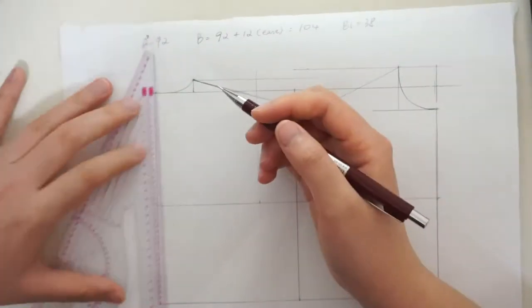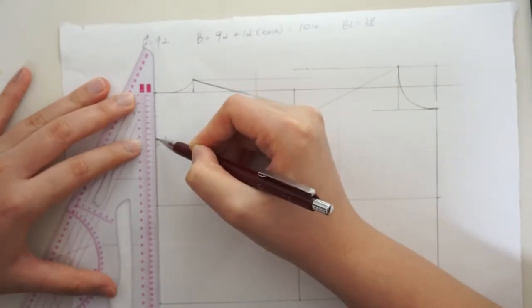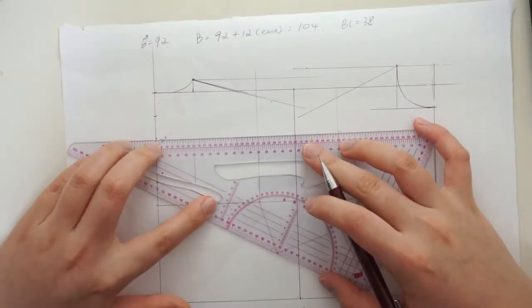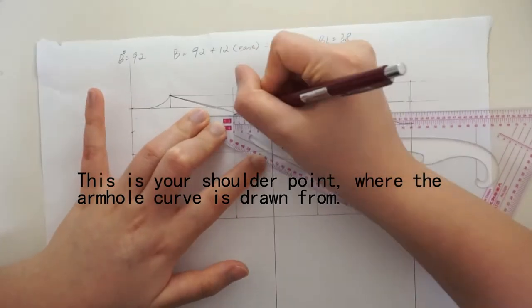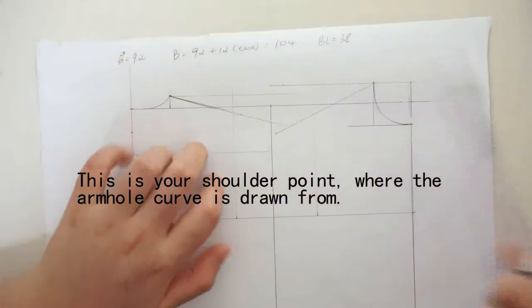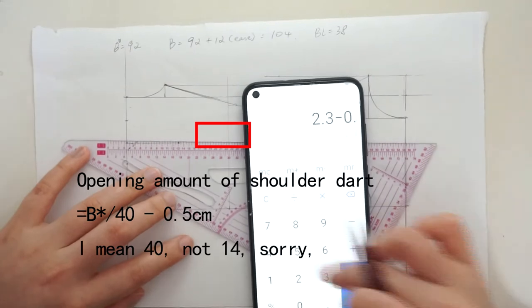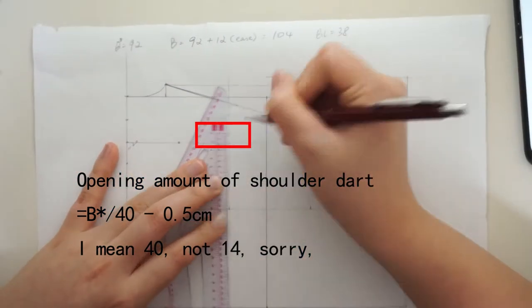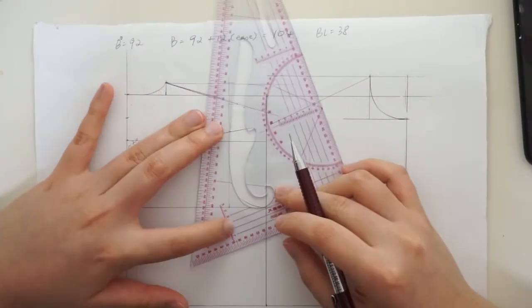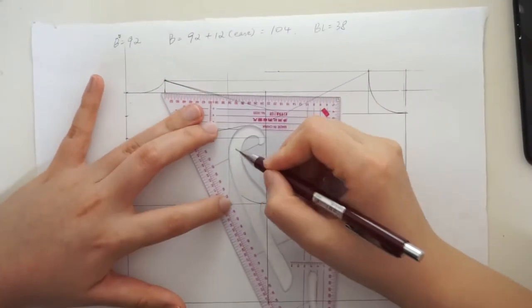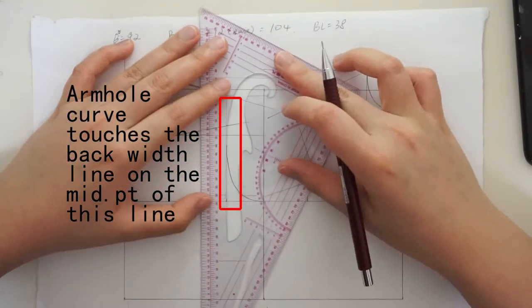Next, we start finding the dots in the armhole. Start with the back. Divide the distance from your neck to your bust into 5 equal parts. Draw a horizontal line on the second portion. Measure 1.5cm from your back width and find an intersection point with your back shoulder seam. Calculate B star over 40 minus 0.5. This is your back dart measurement. Draw a dot at the midpoint on the horizontal line and you can start rounding up the back armhole. I like to wing it as well but make sure the curve touches the back width as shown on the screen.